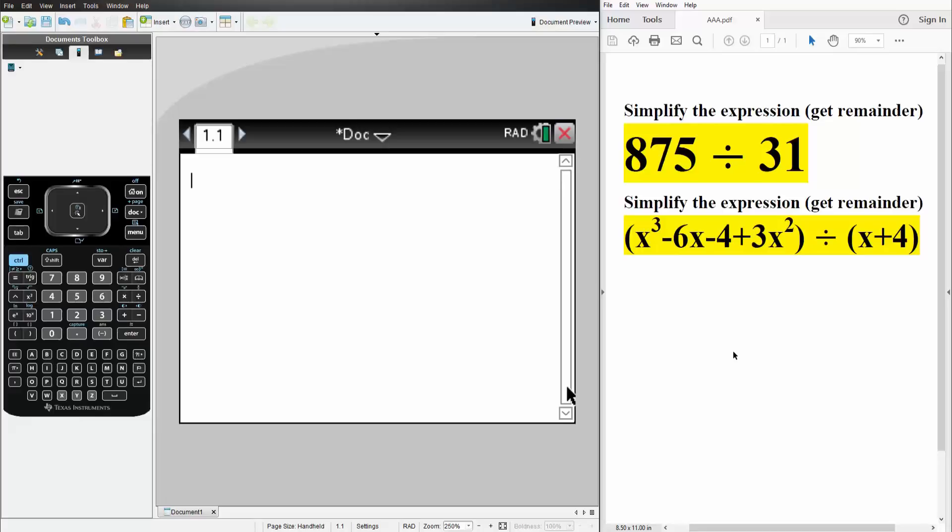In this video, we will do long division and we will get remainders using the TI-Inspire. So we have two problems. First one is to divide 875 by 31. Next problem is to divide this polynomial by x plus 4. So let's get started.